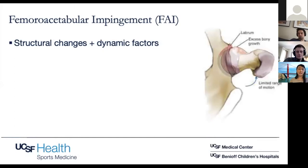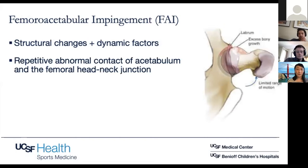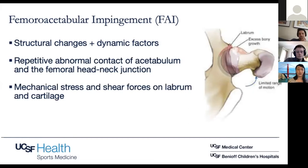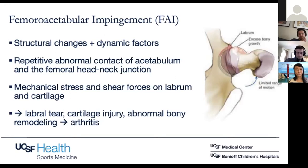It involves structural changes as well as dynamic factors. It's an intra-articular or internal form of impingement where you have repetitive abnormal forces at the acetabulum and femoral neck junction, which leads to mechanical stress and shear forces on the labrum and cartilage. This can lead to labral tears, chondral injuries, abnormal bony remodeling — which is how you get the cam and pincer lesions — and at end stage, it can lead to subsequent arthritis.